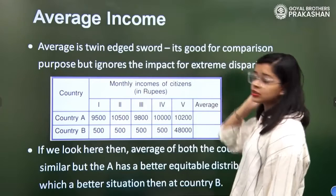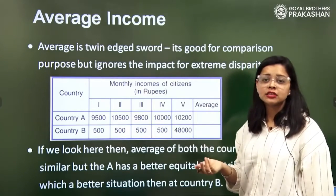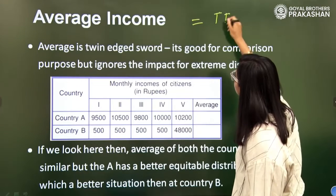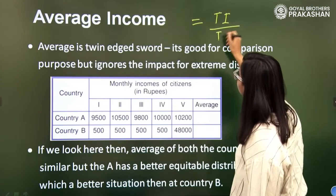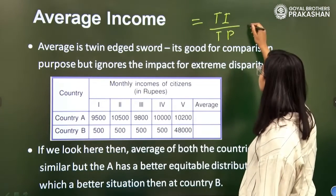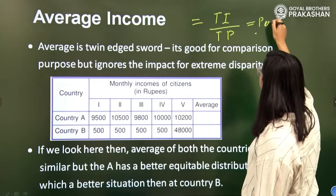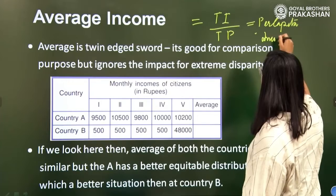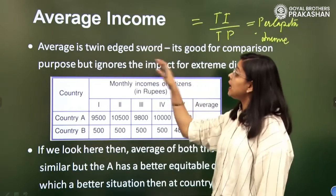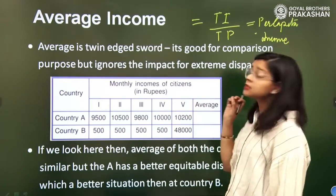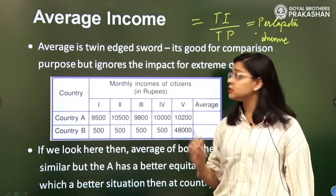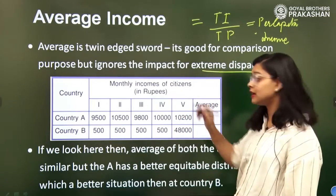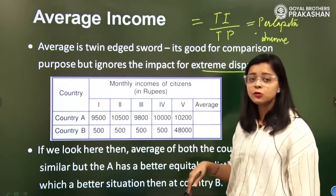Now let's talk more about average income. Total income upon total population is known as per capita income. However, it is a double-edged sword — it may be good for comparison, but it ignores the impact of extreme disparity. Let us take an example with two countries having different income distributions.